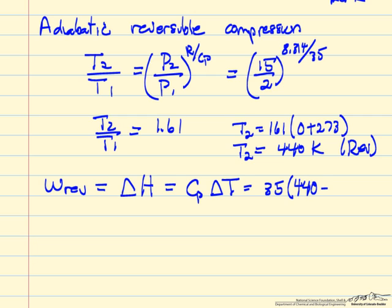So the work for the reversible compressor is 5865 joules per mole.